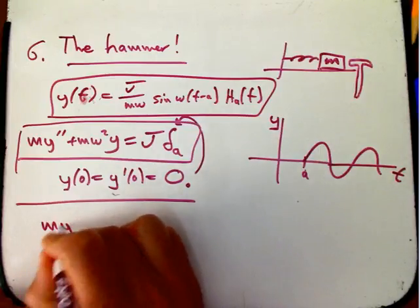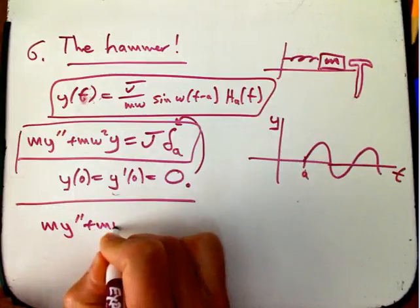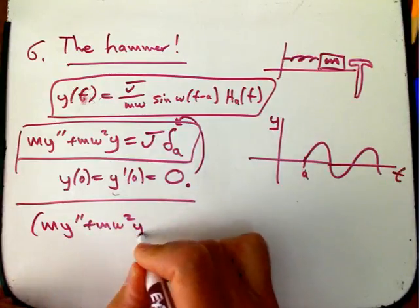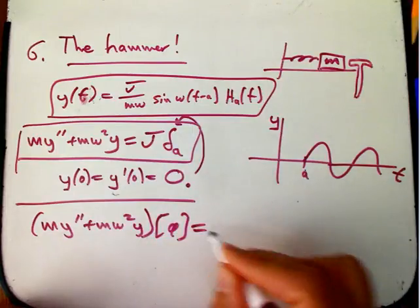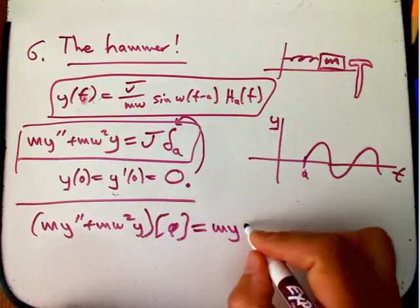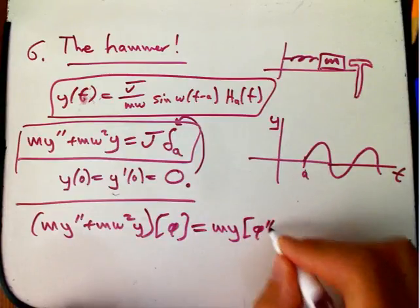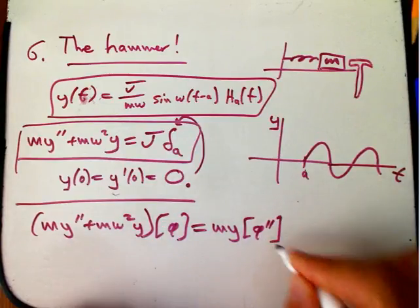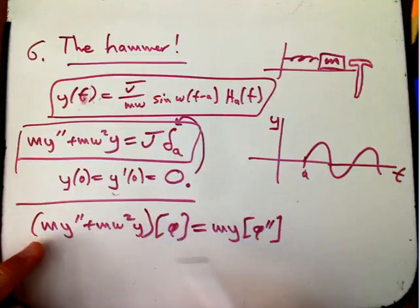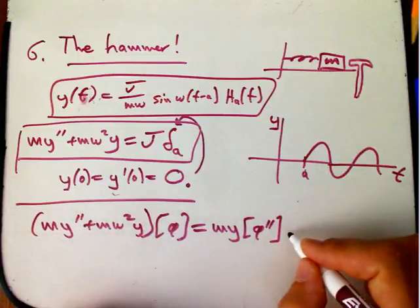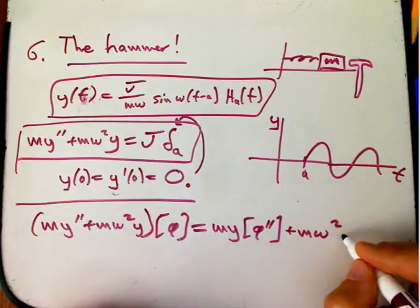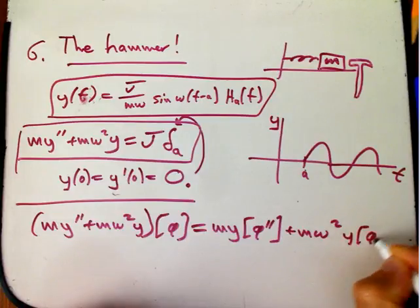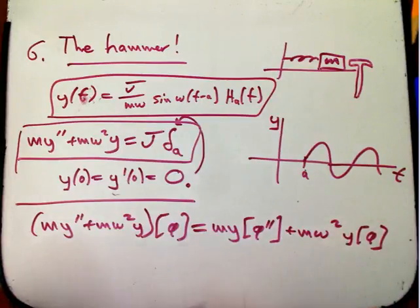We're going to take, this is our y, and we're going to take that combination of y and y double prime, and of course, we're going to evaluate it in the new way by pairing it against the test function. And by definition, this is one reason why we wanted to be able to add and scalar multiply. The m comes out, and then the double prime transfers to the phi. And with two minus signs, so it cancels. And then it's just m omega squared y of phi.